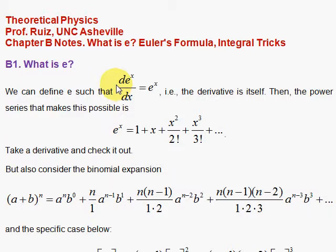to the x as a function where if you take the derivative of it, you get the same function back. So the derivative of e to the x with respect to x is e to the x. And the power series that does the trick is this one.